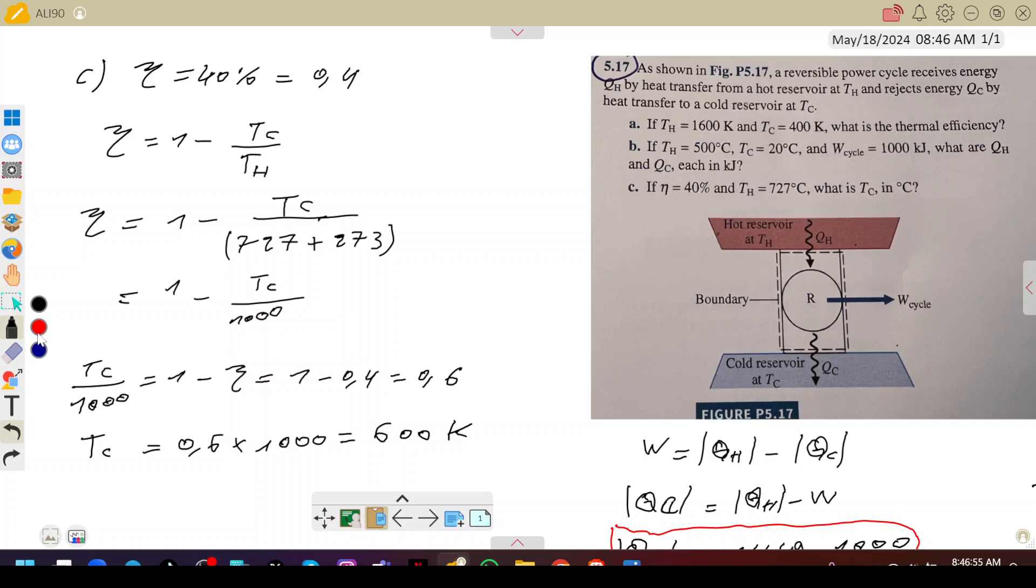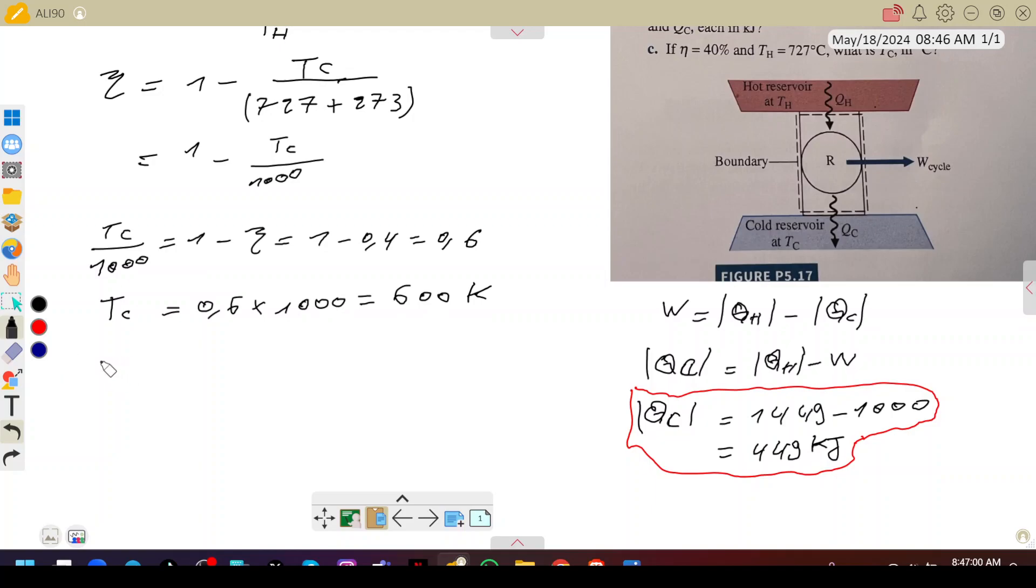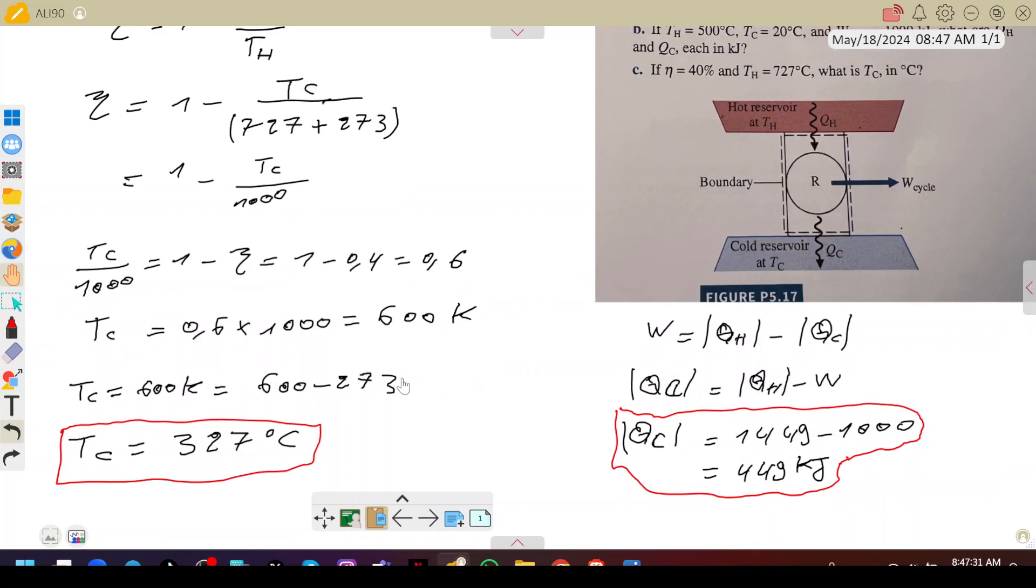We're asked to find Tc in degrees Celsius. It's quite easy now to convert Tc to degrees Celsius. Tc is 600 Kelvin, which would be equal to 600 minus 273. This is 327°C. That's it for this exercise. See you in the next one.